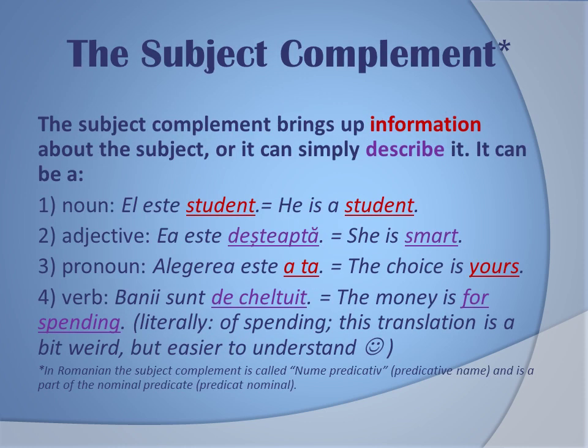The subject complement brings up information about the subject or can simply describe it. First example with a noun: 'el este student' — he's a student. 'Student' gives a sort of identity to 'el'. Second example with an adjective: 'ea este deșteaptă' — she is smart. 'Deșteaptă' is an obvious description of the subject 'ea'.